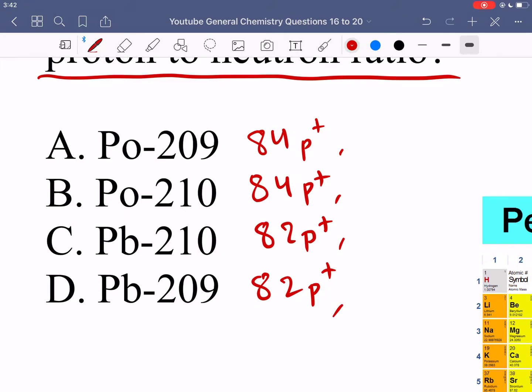The atomic number tells us the amount of protons, so 84 in options A and B and 82 in options C and D. To find neutrons, take the atomic weight minus the protons. The remainder must be neutrons. We get 125, then 126, 128, 127 neutrons. The lowest amount of protons are in C and D, and the most neutrons is in option C. So option C has the least protons and most neutrons, therefore the lowest proton to neutron ratio.